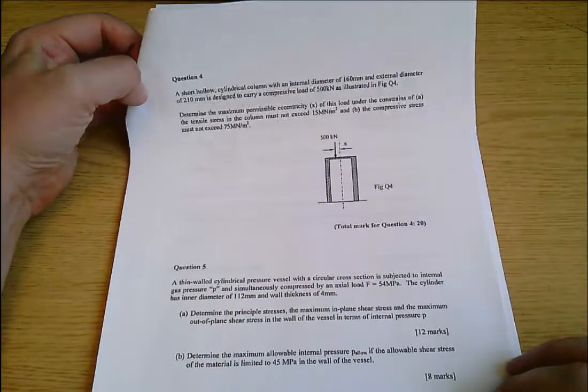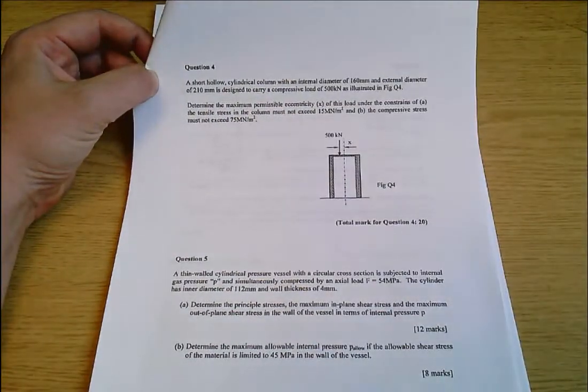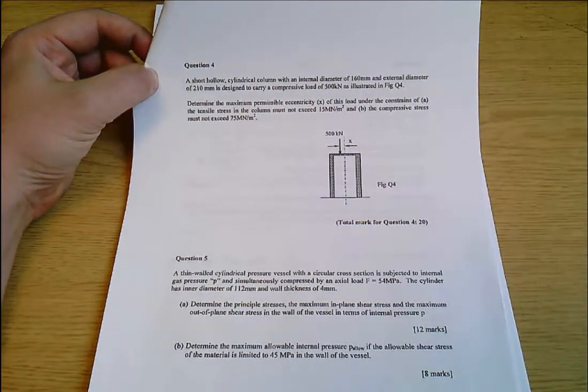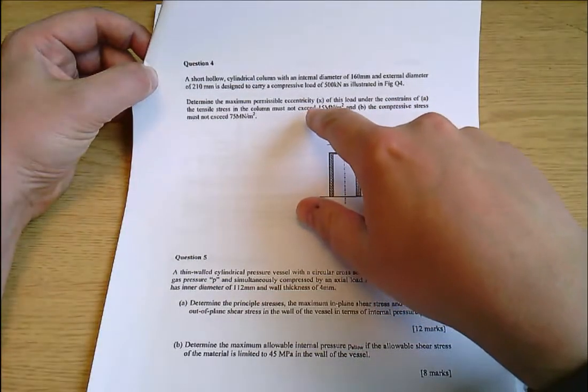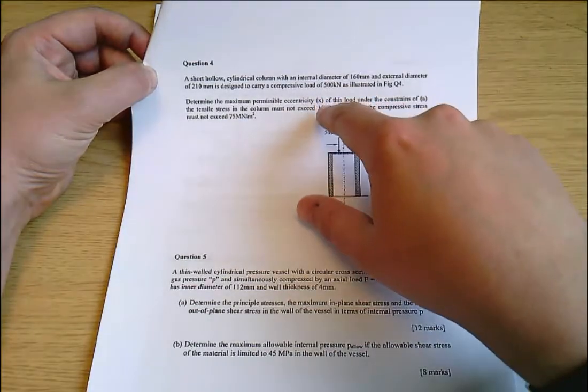So it's this question at the top of the page. We've got a short hollow cylindrical column with various dimensions, compressive load of 500 kilonewtons and it's going to be an eccentric load and we're not to exceed 15 megapascals tensile stress or 75 megapascals compressive stress.